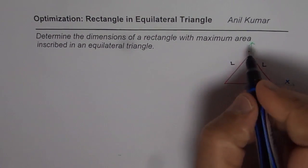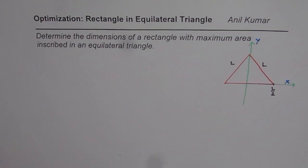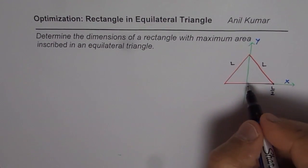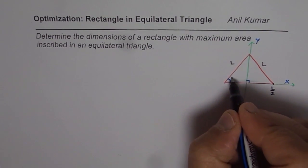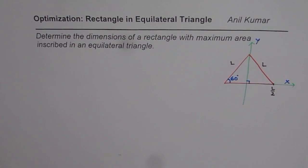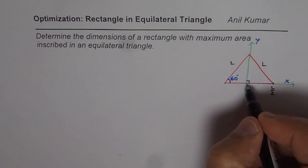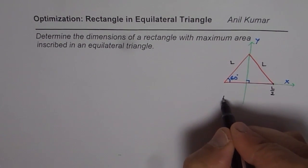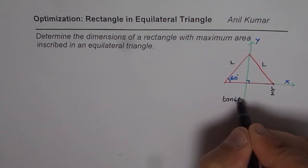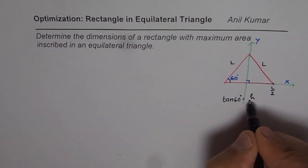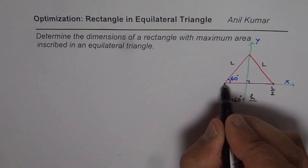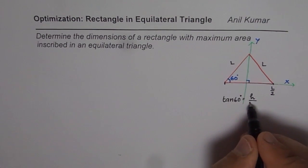That is a strategy which is going to help me solve this problem more efficiently. This is a right triangle with our XY axis. Since it is an equilateral triangle, this angle is 60 degrees. Once you know that the angle is 60 degrees, you can find the height of the triangle. What is tan of 60? Tan of 60 degrees is opposite over adjacent side, so the opposite side is the height we want to know, and the adjacent side is L over 2.